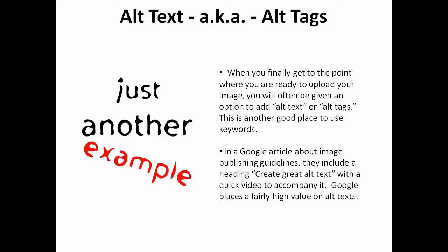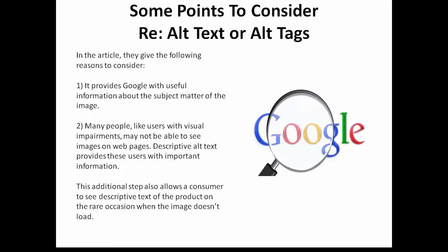Alt text, also known as alt tags. When you finally get to the point where you're ready to upload your image, you will often be given an option to add alt text or alt tags — this is another good place to use keywords. In a Google article about image publishing guidelines, they include a heading, "Create Great Alt Text," with a quick video to accompany it. Google places a fairly high value on alt text. They note it provides Google with useful information about the subject matter of the image, and that many people with visual impairments may not be able to see images on web pages, so descriptive alt text provides these users with important information. This additional step also allows the customer to see descriptive text of the product on the rare occasion when the image doesn't load.